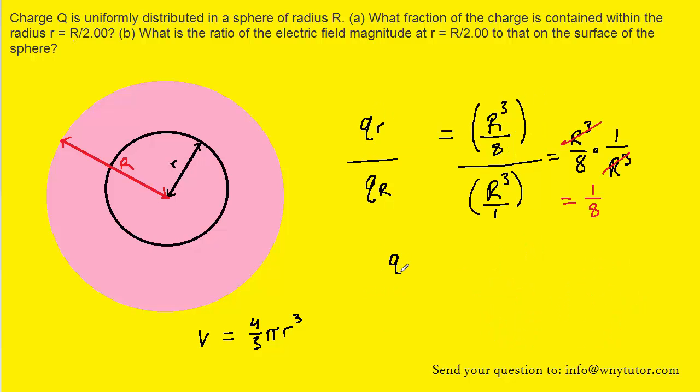So this means that if we took the amount of charge in the smaller sphere and divided it by the amount of charge in the overall large sphere, we would get 1 eighth. And this turns out to be the correct answer to Part A, because the left-hand side of this equation is indeed the fraction of the charge that is contained within the smaller sphere.